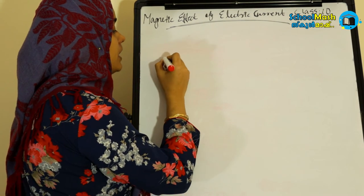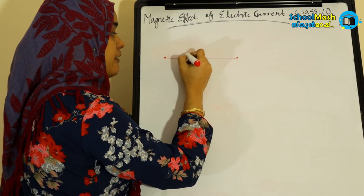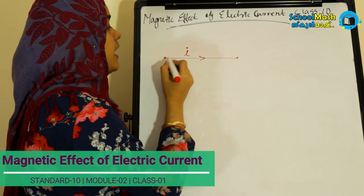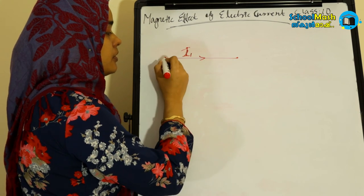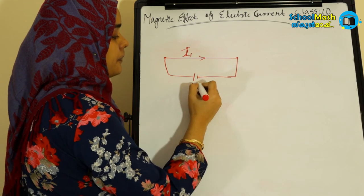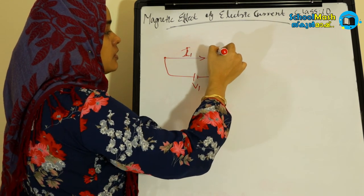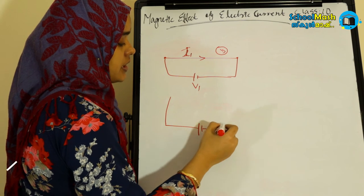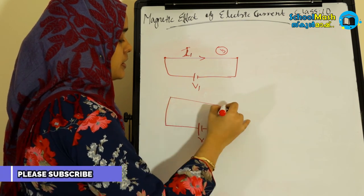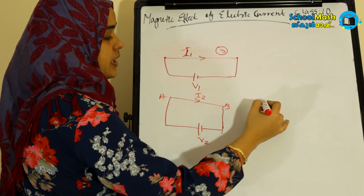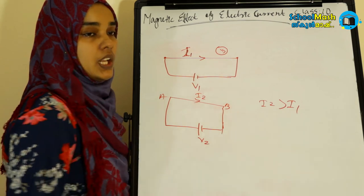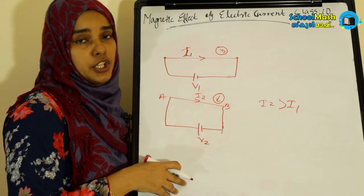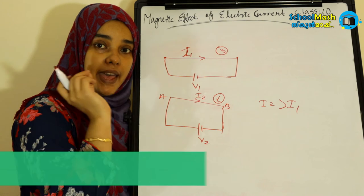For a given direction of current, the magnetic field will vary with the conductors. Now, I have a current and I will increase the current. I will increase the current here — the voltage increases, the current I2 is greater than I1. At that time the compass will be very deflective — the deflection increases with higher current.